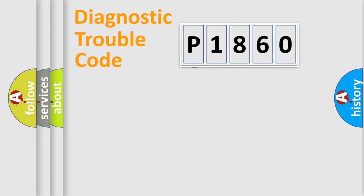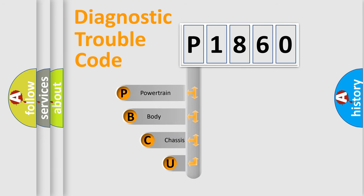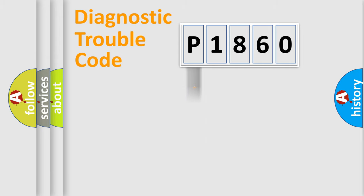First, let's look at the history of diagnostic fault code composition according to the OBD2 protocol, which is unified for all automakers since 2000. We divide the electric system of an automobile into four basic units: Powertrain, Body, Chassis, and Network. This distribution is defined in the first character of the code.